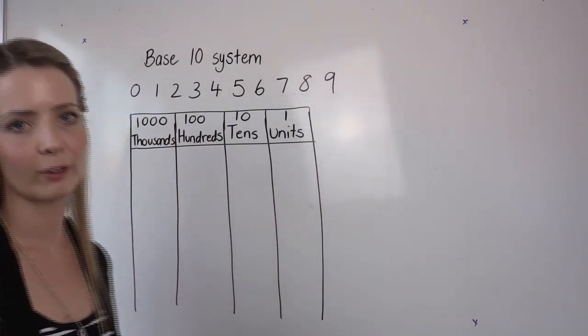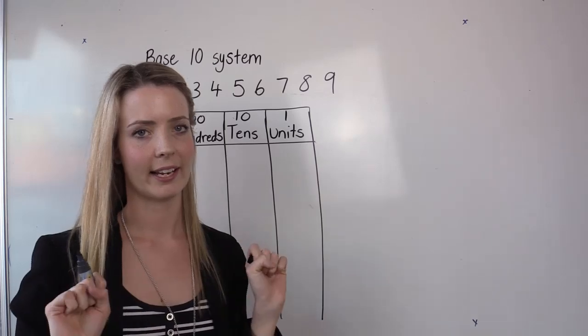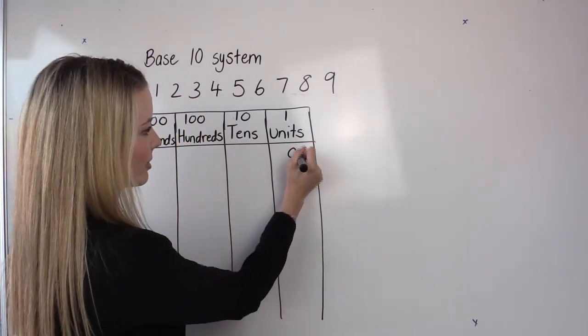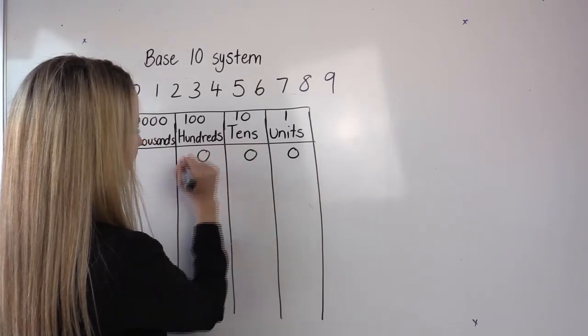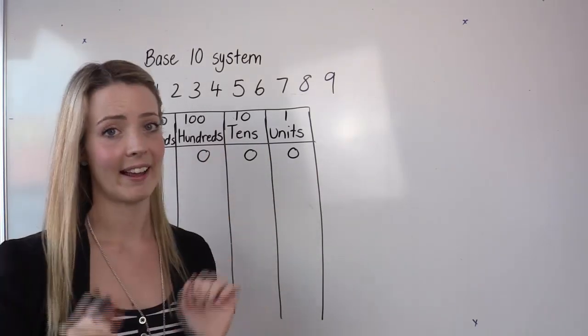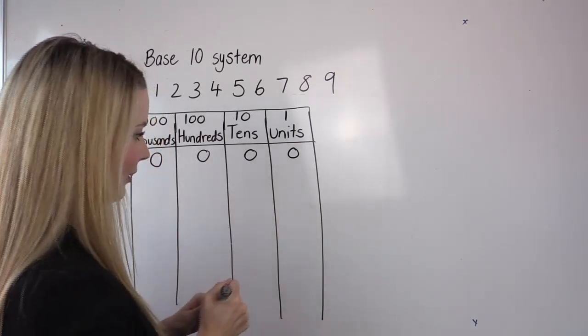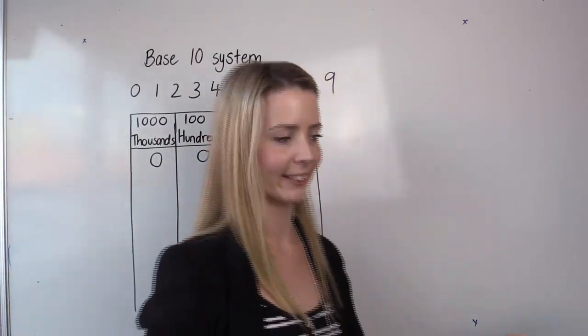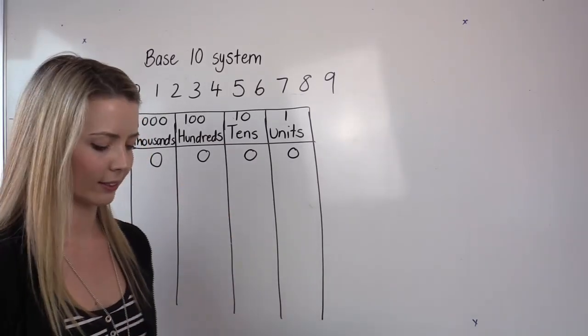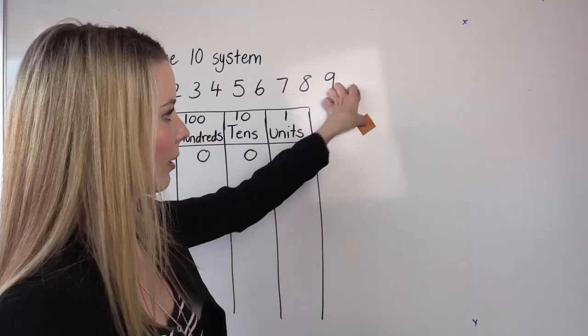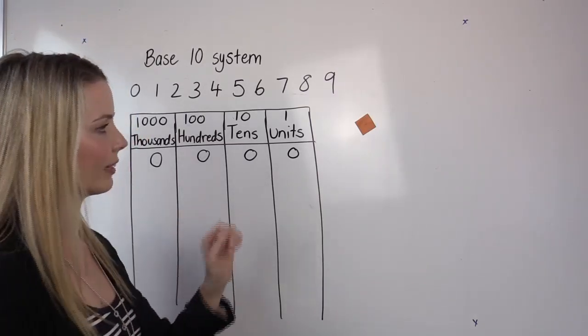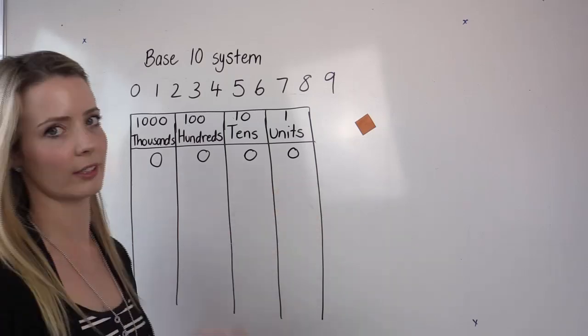To start off with, if I'm counting objects, I might begin with nothing. So I'm going to put zeros in all of these columns and that indicates that I have nothing. So let's do some counting. Now what I'm going to do is count these little squares. If I have one square, before I had nothing, I then need to change something on the chart, which is the units.